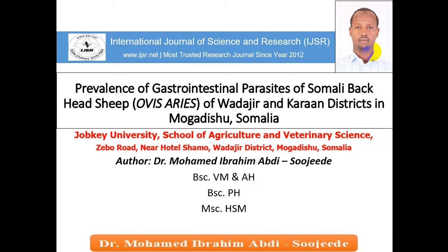The scientific name of this sheep is Ovis aries. The study area was two districts in Mogadishu, Somalia — Wadajir and Karan districts. The study was administered at Jobka University School of Agriculture and Veterinary Science, located near Hotel Shamo in Wadajir district.